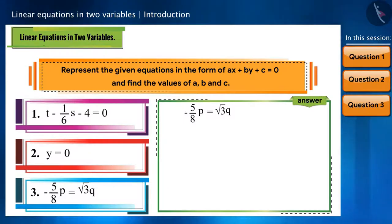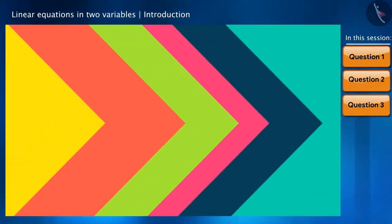Similarly, we will see the third equation also very carefully and write it in the general form, and we will get a is equal to minus 5 by 8, b is equal to minus root 3, and c is equal to 0. This is one question that you should solve yourself.